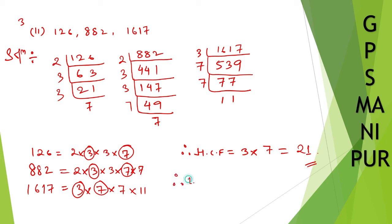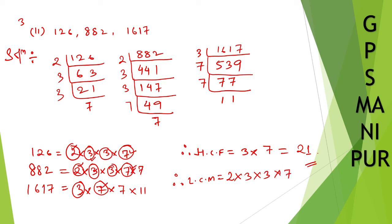Now for the LCM. Take 2 (from 126 and 882). Take 3 twice (3² appears in 126 and 882). Take 7 twice (7² appears in 882 and 1617). And finally take 11 (from 1617). So LCM = 2 × 3 × 3 × 7 × 7 × 11.